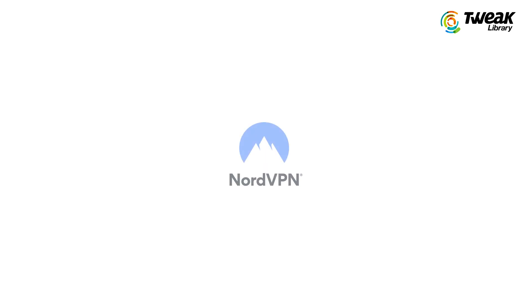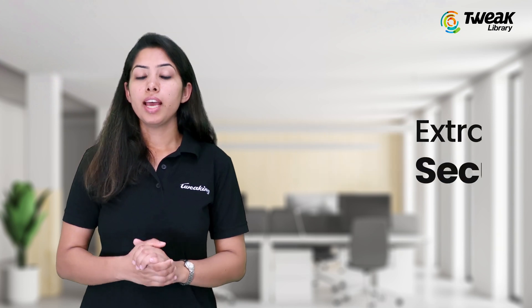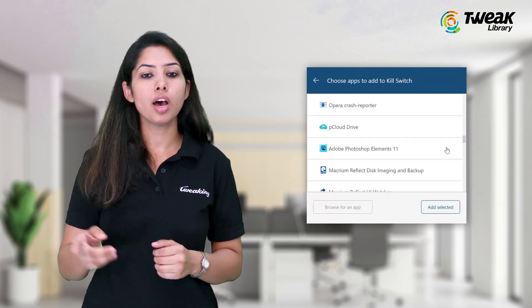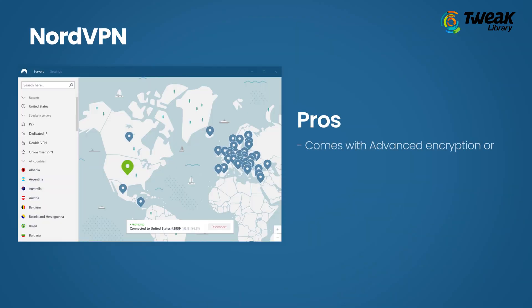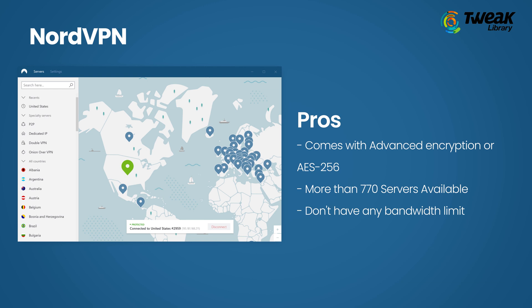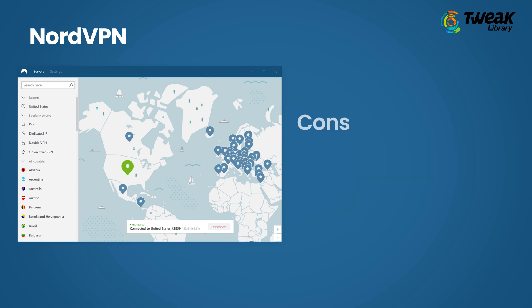On second we have NordVPN which also gives you an extra layer of security. It also has a kill switch just like Surfshark that ends the connection when internet goes down. Advanced encryption standard or AES-256 is used to secure all the information. You have more than 770 servers available to choose from, and there is no bandwidth limit to access the internet with Nord. However, your browsing speed may vary when the chosen server is experiencing heavy traffic, and torrenting is usually supported only on a few servers.